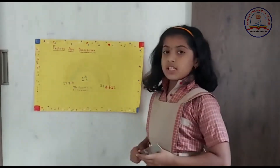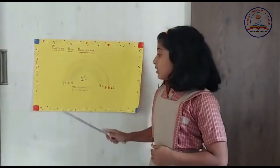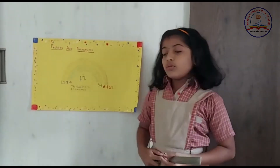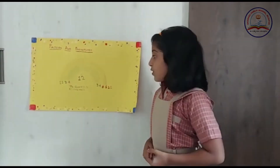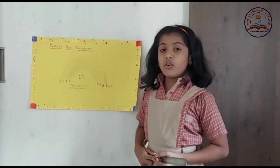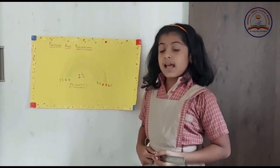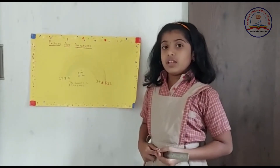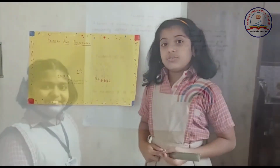4 × 3 = 12. The factors of 12 are 1, 2, 3, 4, 6 and 12. Thank you.